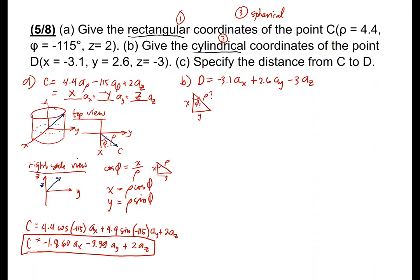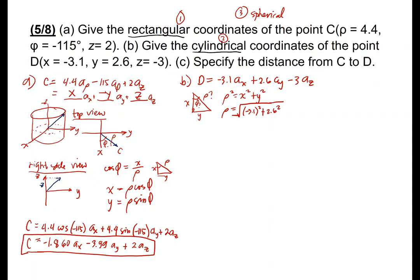We know this is a right triangle, so rho follows the Pythagorean theorem: rho equals the square root of X² plus Y². Therefore, rho equals the square root of (−3.1)² plus (2.6)². That gives us our rho. How about phi? The Z value is simply equal to negative 3, same as in the rectangular.